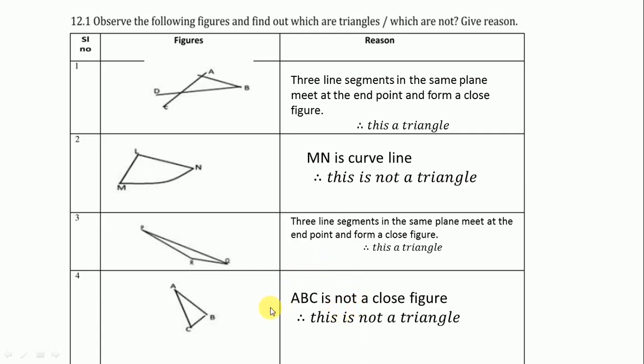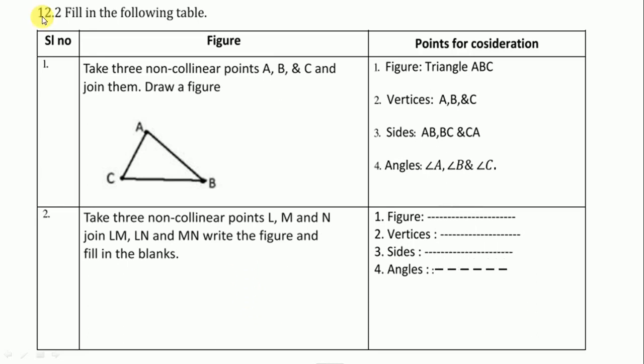Let's move to next one. 12.2, fill in the following table. One example is given here, we have to write this one. Take three non-collinear points L, M, and N. Join LM, MN, and MN, write the figure and fill in the blanks. If we join three non-collinear points we get a triangle. So first we draw triangle, non-collinear points. After joining we get a triangle, we label as L, M, and N.